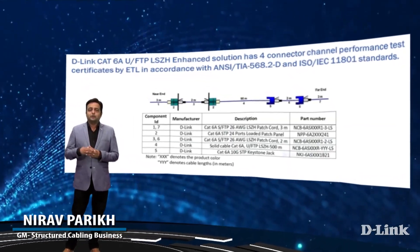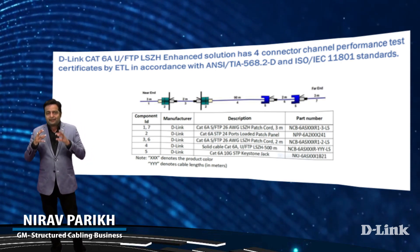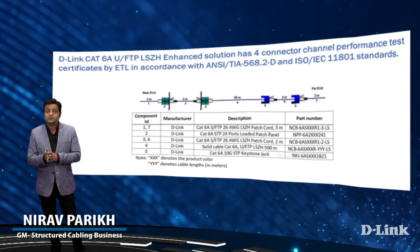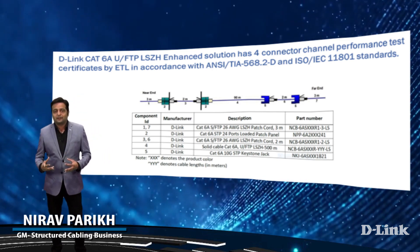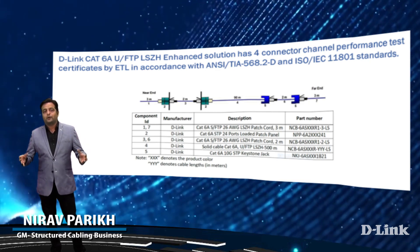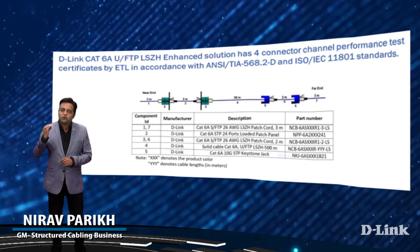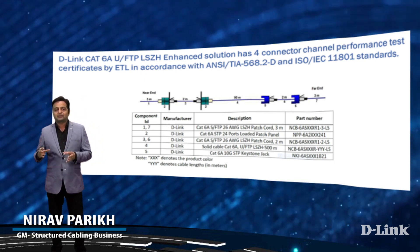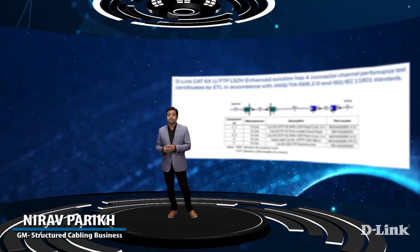D-Link CAT 6A S/FTP LSZH category solution has a 4-connector channel performance test certificate by ETL in accordance with the latest standards, including cable and all components used in the channel. All pairs are individually shielded to mitigate crosstalk, and this also makes it a suited construction for higher ampacity requirements.